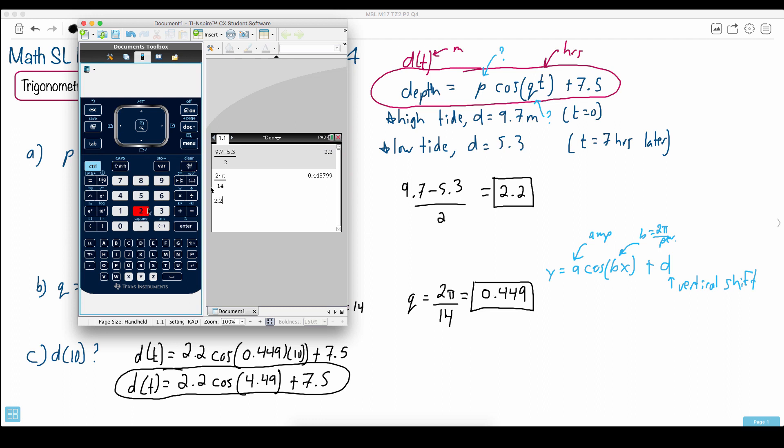So you can do it all in one go, so you can say 2.2 times cosine. Cosine is a trigonometric function, so we press this, and say cos, and I put in 4.49.